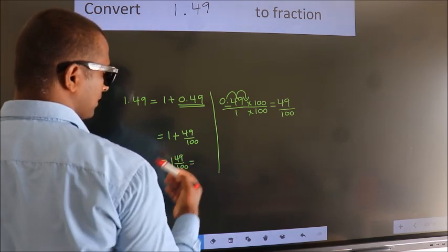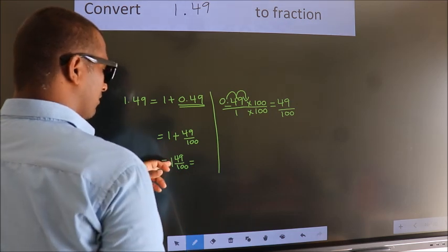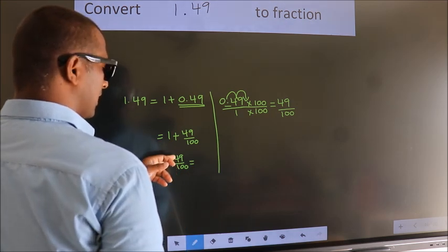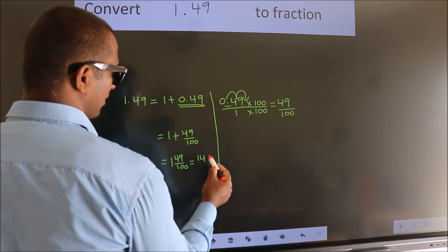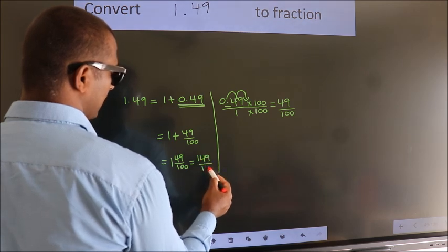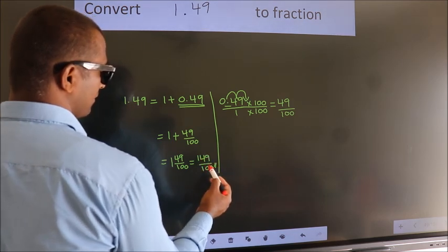And in improper fraction it is 1 into 100, 100 plus 49. 149 by 100 is our fraction.